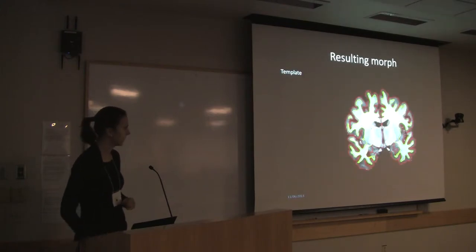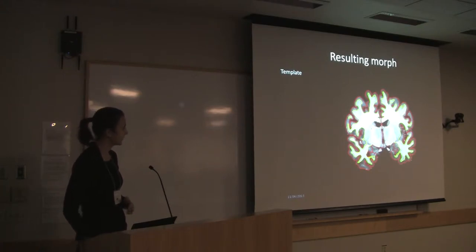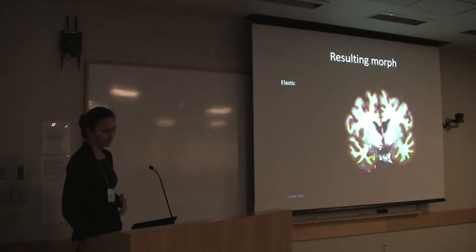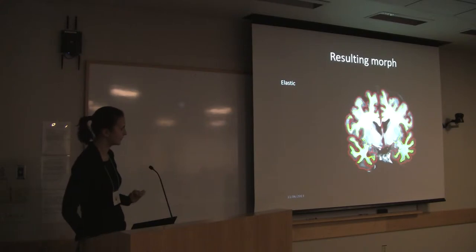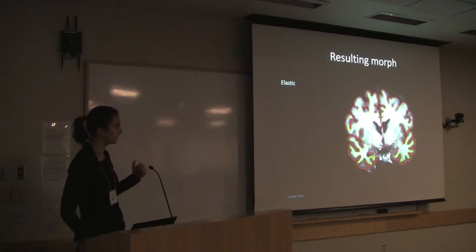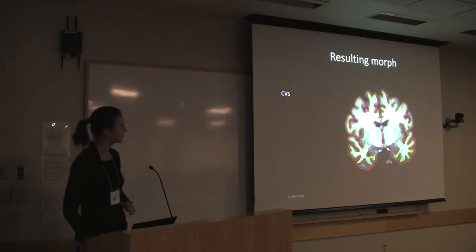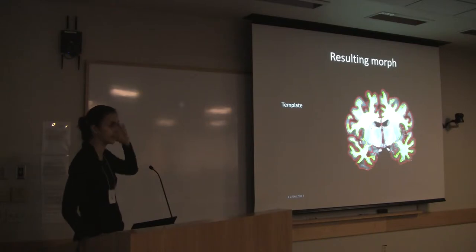Let me show you some resulting resampled images from running this algorithm. Here we have the template — we extracted the surfaces from this template. You have the elastic morph, which is just the second step of the registration solution I just presented. You can see that the cortical folding patterns are nicely aligned, but we haven't done the volumetric registration step that would align the subcortical areas. Here's the output of the full algorithm — clicking back and forth between the templates and the resampled volume, the alignment is really accurate with very close correspondence between the resampled and template images.